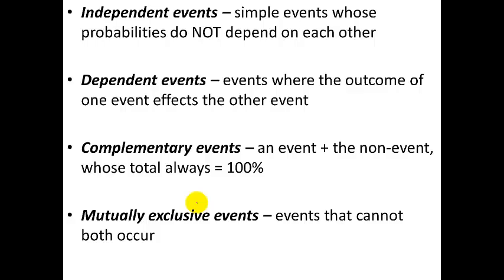Independent events are simple events whose probabilities do not depend on each other. The two things have no correlation. For example, if you flip a coin and then you roll a dice, the outcome of one has no impact on the outcome of the other, so those would be independent. Dependent events, on the other hand, means one thing is affected by or can affect the other — the outcome of one event will influence the outcome of the other.